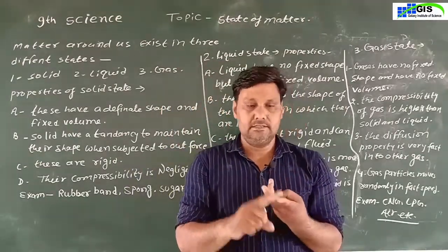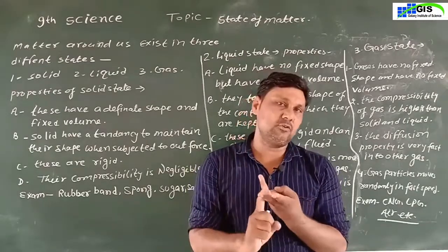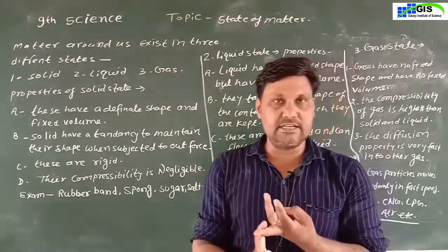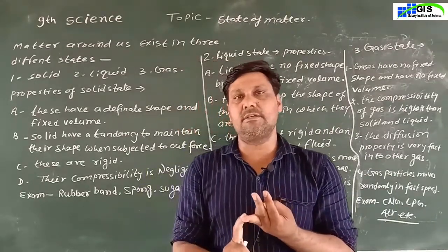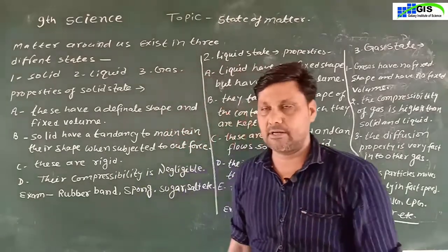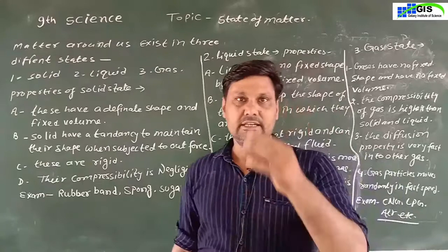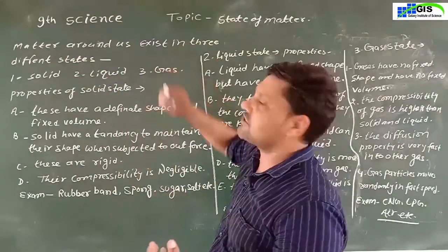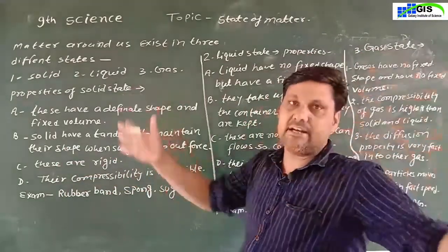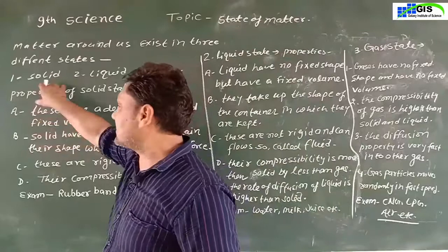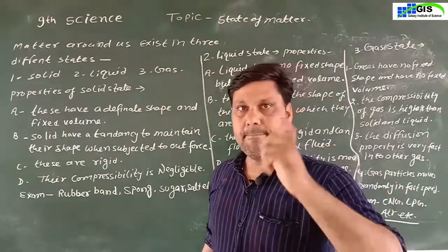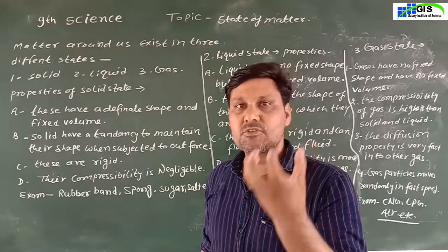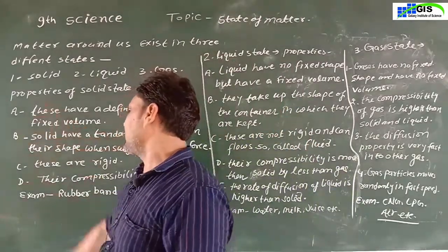تو ان 3 states میں matter کی جو properties ہوتی ہیں وہ کیا ہوتی ہیں؟ Solid state میں matter کی کیا properties ہوتی ہیں؟ Liquid state میں اس کی کیا properties ہوتی ہیں؟ And gaseous state میں اس کی properties کیا ہوتی ہیں؟ ان سب کو آج ہم یہاں پر check کریں گے۔ تو listen to me clearly and consciously. Matter جو آپ کے around exist ہے وہ 3 parts میں divided ہے — solid, liquid and gas. تو first میں دیکھتے ہیں جو solid matter ہوتے ہیں وہ کس طرح کی properties رکھتے ہیں۔ What are the properties of solid state of matter?